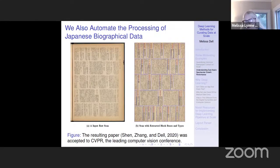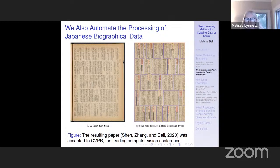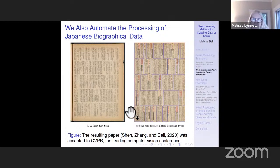We have other sources as well — this is an example of Japanese biographical data where we use a similar process. These are sources that economists would have used before, but they just never could have used these particular sources because it's just too costly to digitize by hand. As a result, there's a big gap in our knowledge about traditional questions of economic growth that economists need to understand. We just can't do it without finding a way to feasibly digitize the disaggregated data needed to answer a lot of important questions.